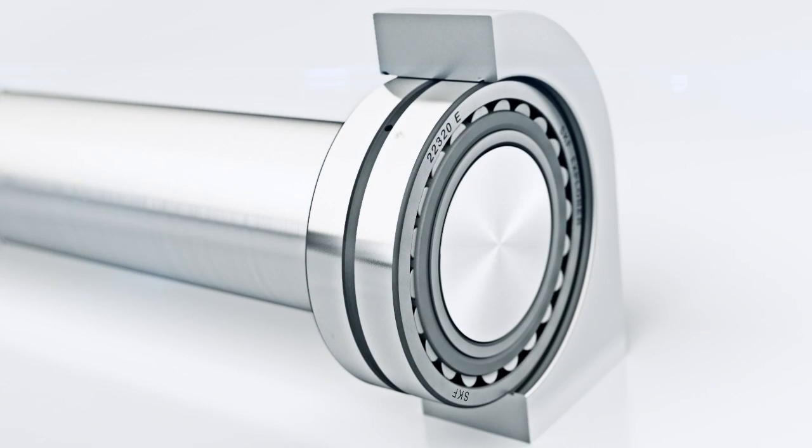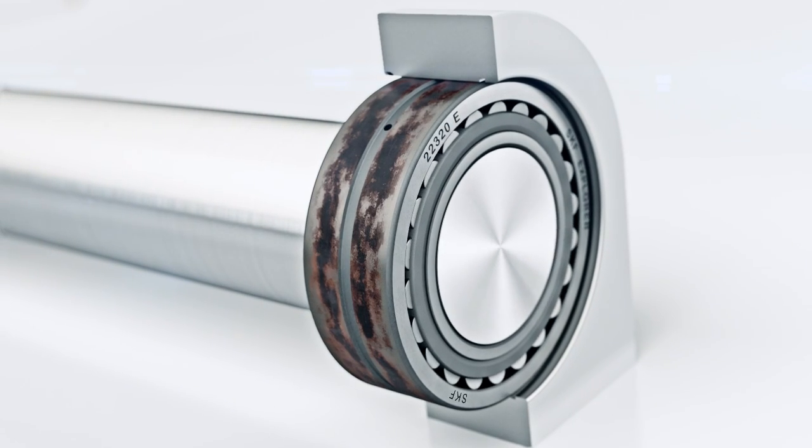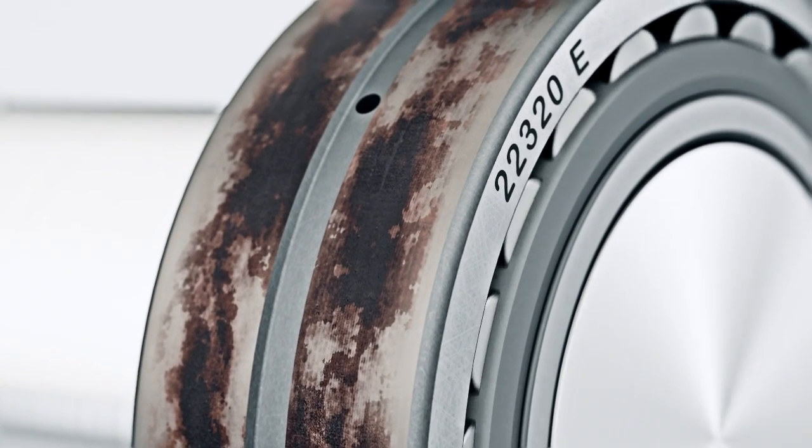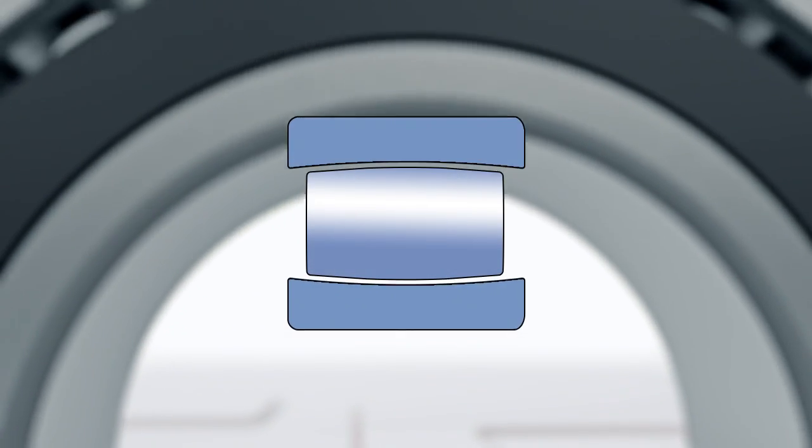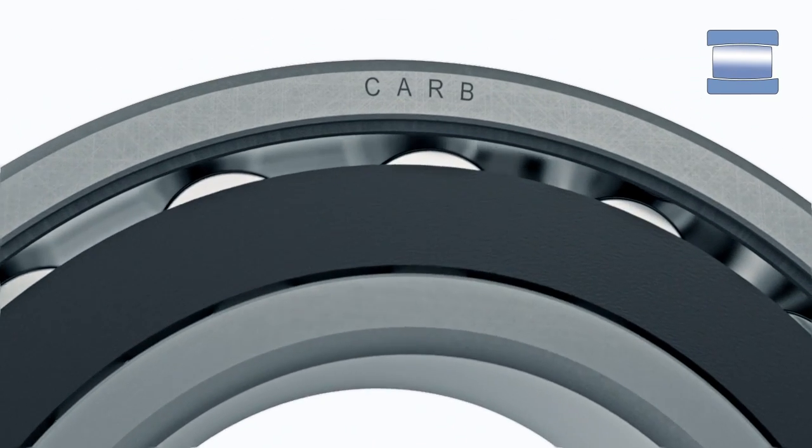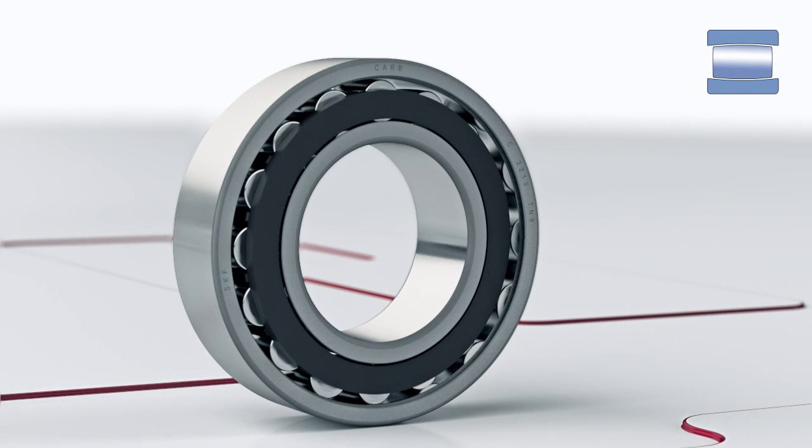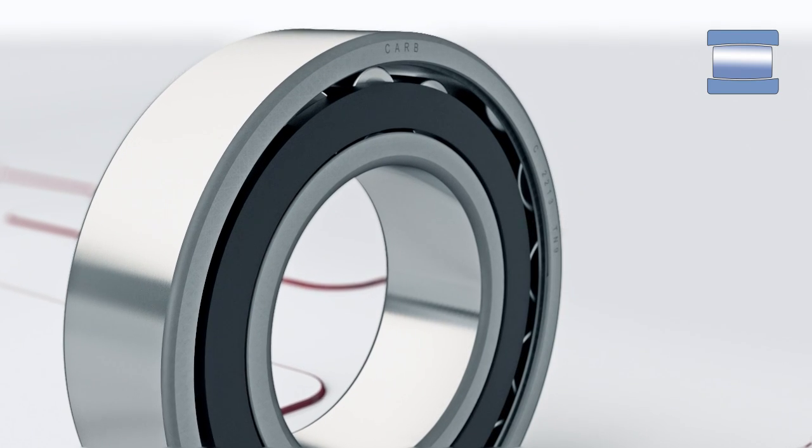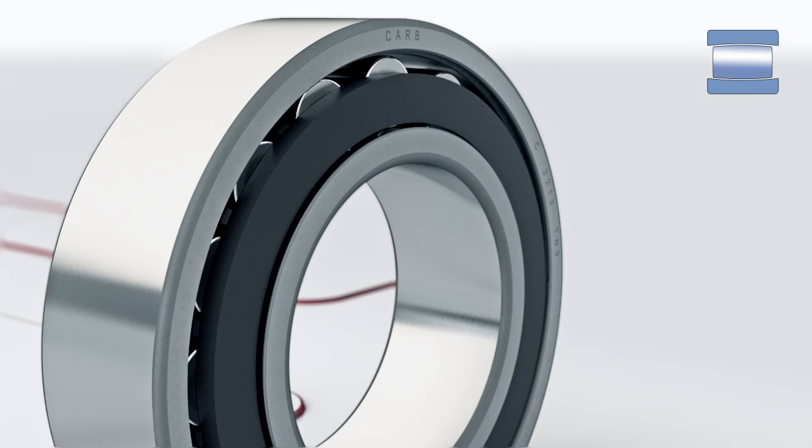Sliding of the bearing can cause wear and fretting corrosion. This will induce high axial loads and eventually cause failure. To solve these issues, SKF invented the CARB bearing. It supports high loads and accommodates misalignment. It also allows axial displacement within the bearing with virtually zero friction.